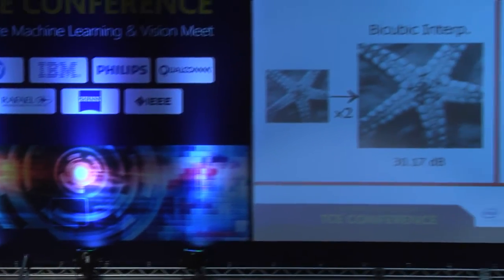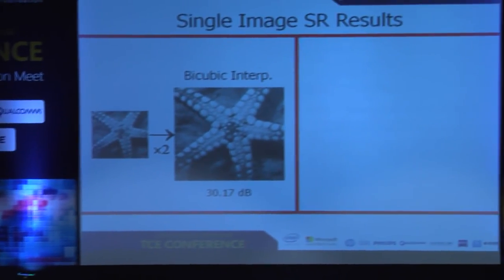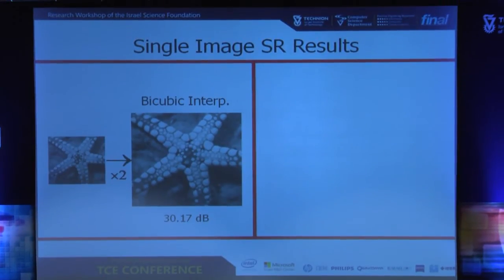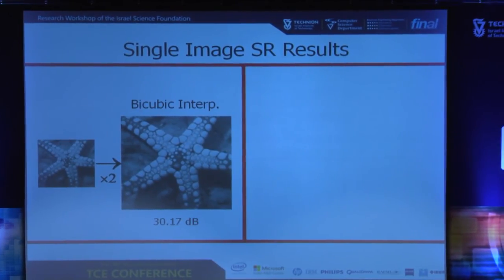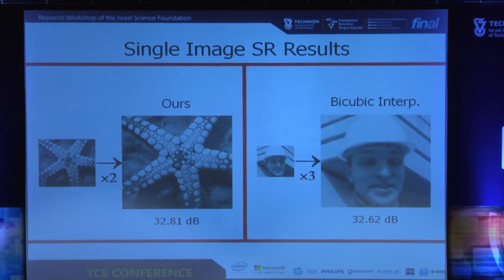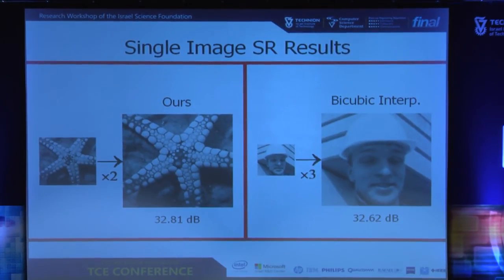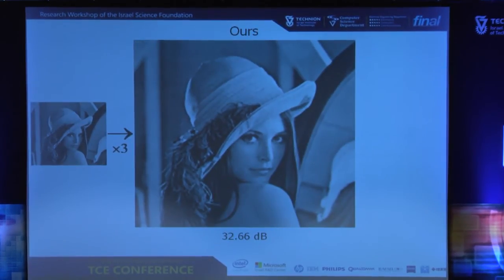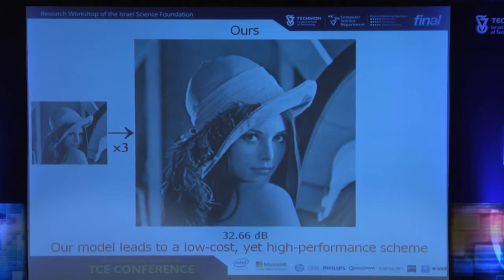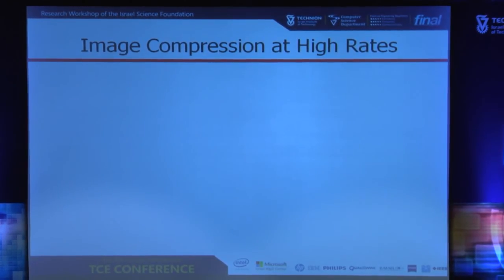I would like to show you that this actually works. For the starfish image at scale factor two, you can see the result of bicubic interpolation versus our result — both numerically and visually the improvement is clear. Similarly for the Foreman image at scale factor three, you can see the enhancement of edges and improvement in quality. And similarly for the LENA image, bicubic versus our result.